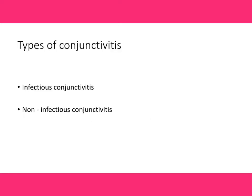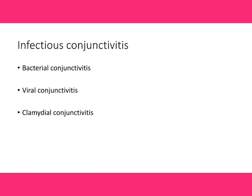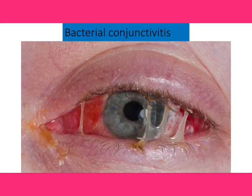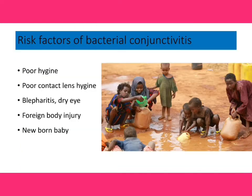There are two types of conjunctivitis: infectious and non-infectious. Infectious means due to infection by microorganisms such as bacteria, virus, or chlamydia. Let's start with bacterial conjunctivitis — if conjunctivitis is due to bacterial infection, it is called bacterial conjunctivitis.